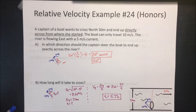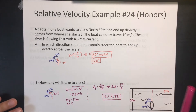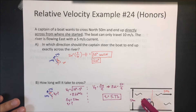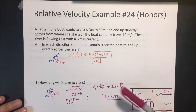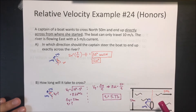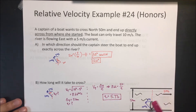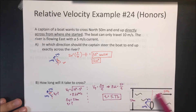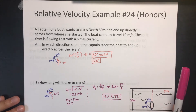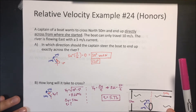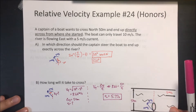Key takeaway: whenever the problem says directly across, steer against the current. Whatever speed the current pushes in one direction, cancel it out with the same speed in the opposite direction. That's the key for 'directly across' problems.